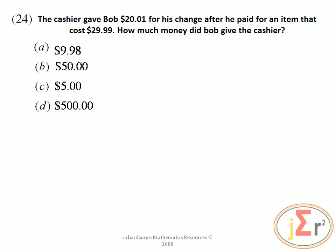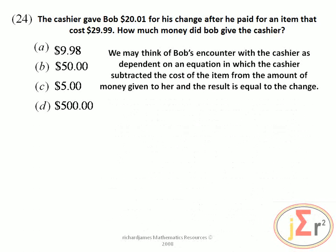The cashier gave Bob 20 dollars and 1 cent in change after he paid for an item that cost 29 dollars and 99 cents. How much money did Bob give the cashier? We may think of this as an equation in which the cashier subtracted the cost of the item from the amount of money given to her, with the result being the change. So: money minus price of item equals change.